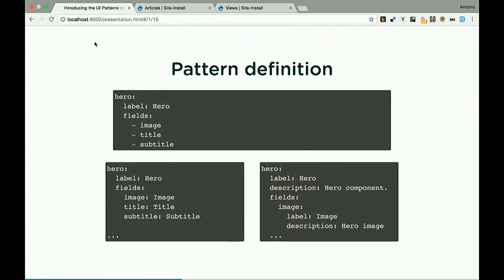Pattern definitions are flexible and can become complex depending on your use case. If you just want to expose a pattern, you can simply define a hero pattern with its fields: image, title, subtitle. Or you can be more verbose to use the metadata as documentation — giving labels and descriptions to fields. Both formats are compatible. One pattern definition file can contain one or multiple definitions.